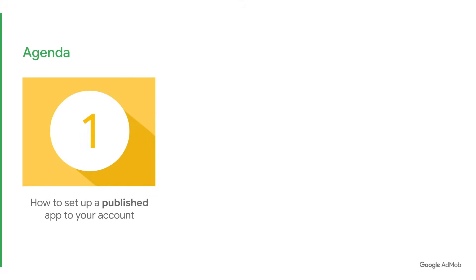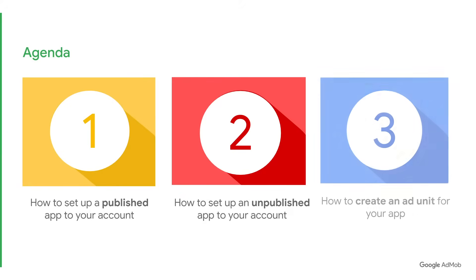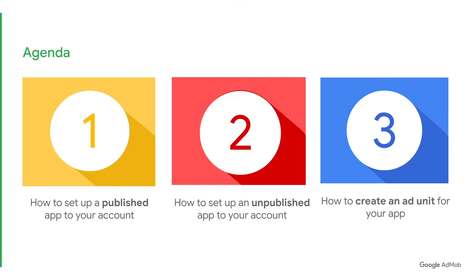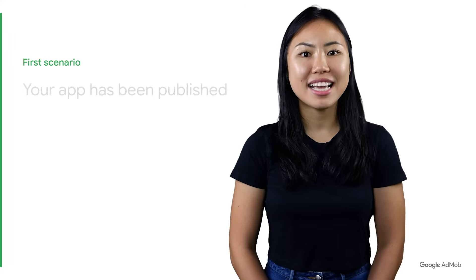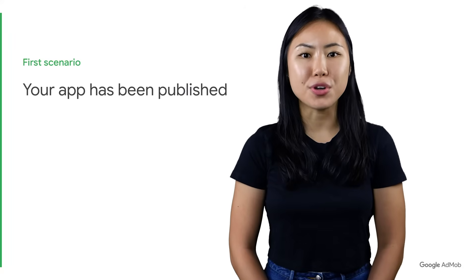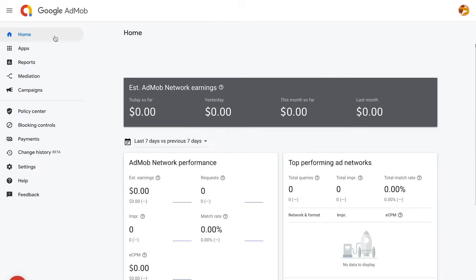1. How to set up a published app. 2. How to set up an unpublished app. 3. How to create an ad unit. Let's start with the first scenario: adding an app to your AdMob account when it has already been published on its App Store.